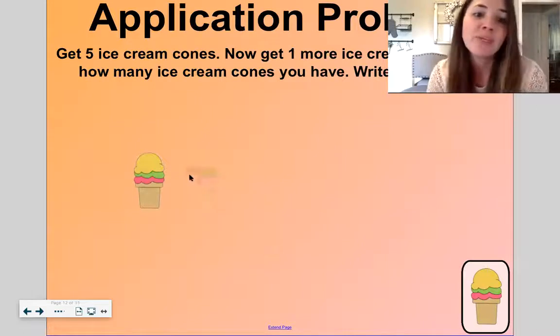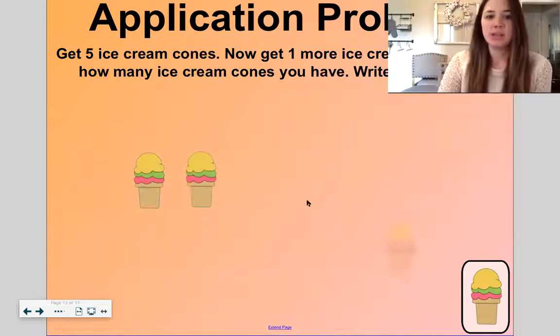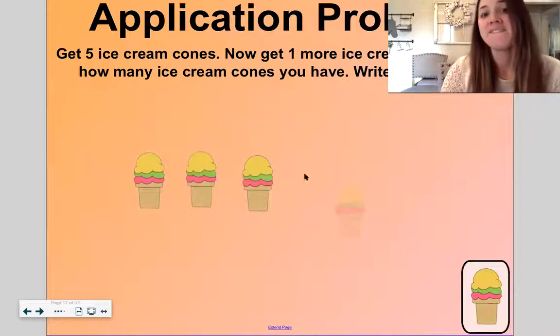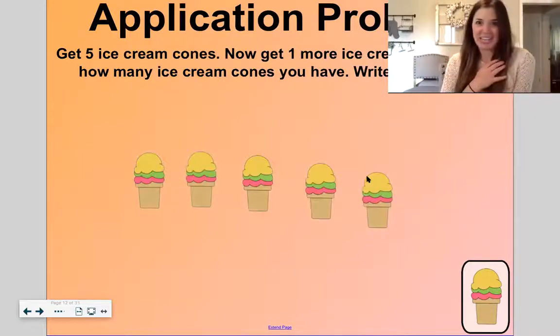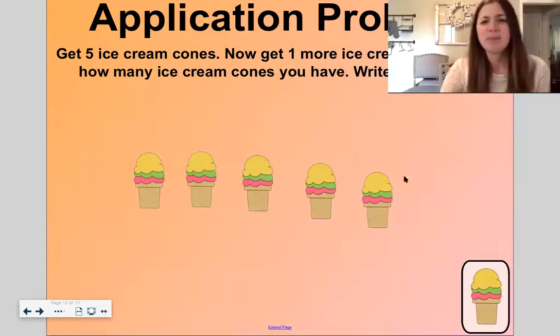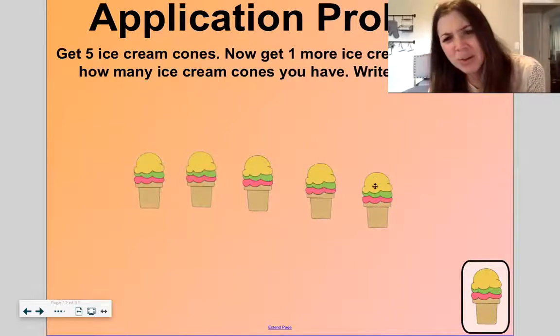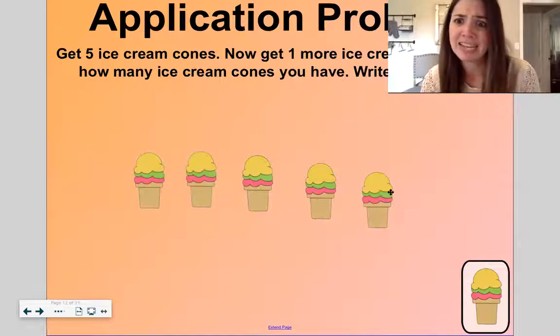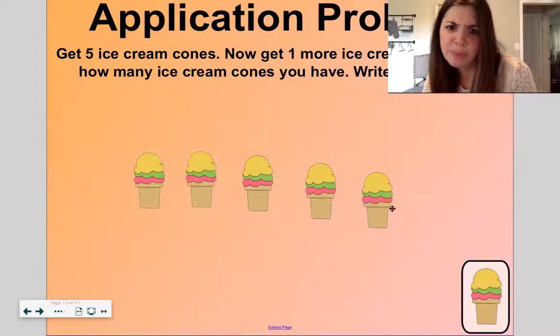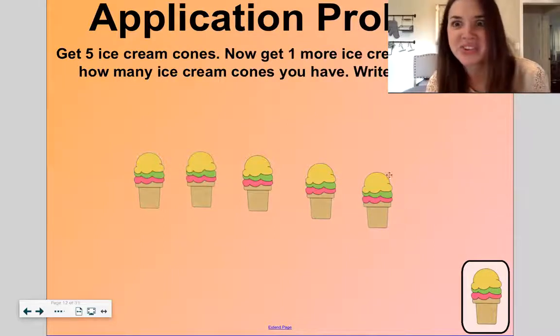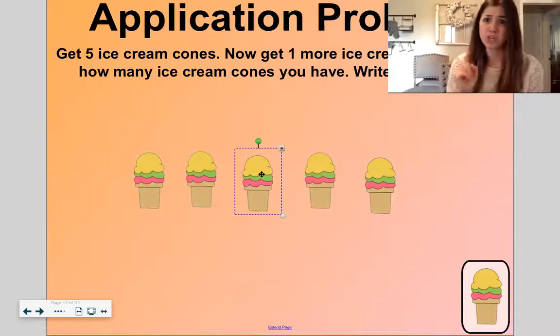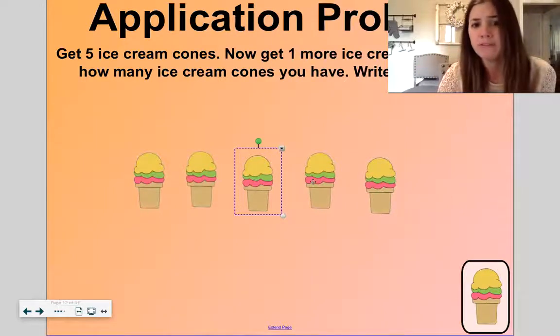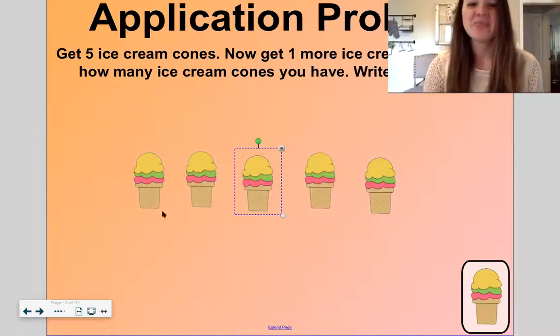One, count with me, two, three, four, five. I would love to look up all that ice cream. I wonder what flavor ice cream this yellow one is. Maybe like lemon or banana. Maybe the green one is like mint. Maybe the pink one is like strawberry. That's a good combination. So let's make sure we have five. Remember, it's always good to check your work. One, two, three, four, five.